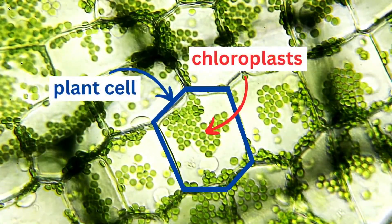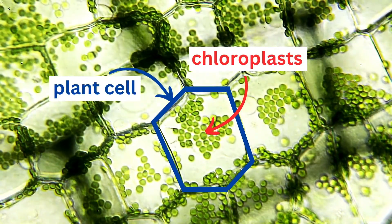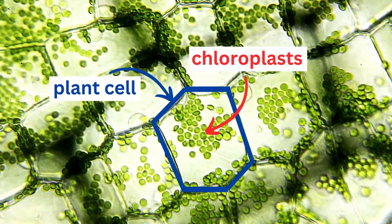Inside the plant's cells, there are tiny structures called chloroplasts. These are chloroplasts under a microscope. They're responsible for making photosynthesis happen.